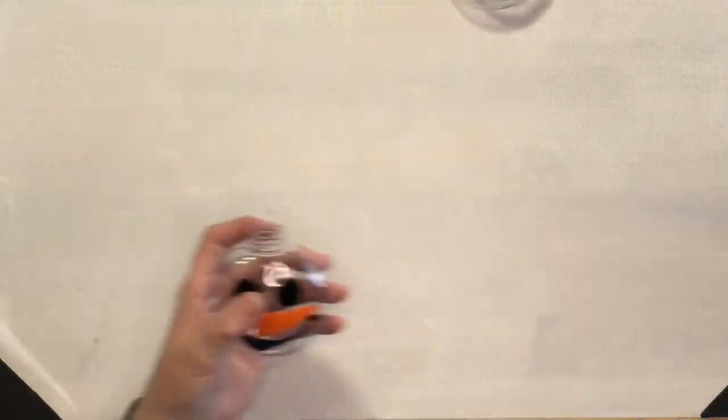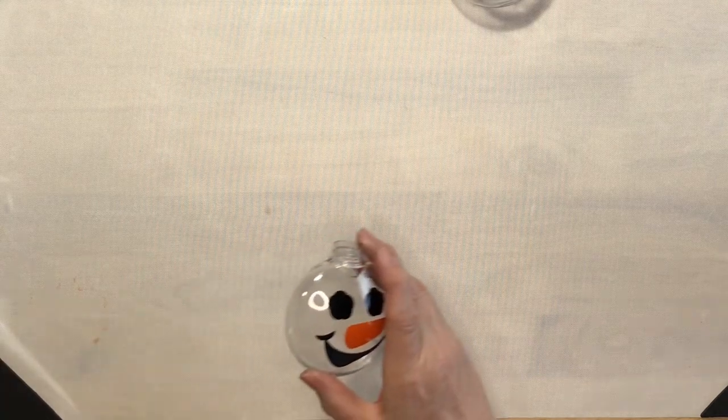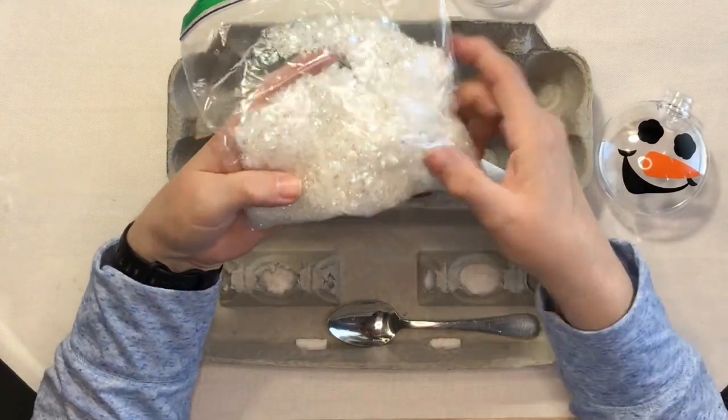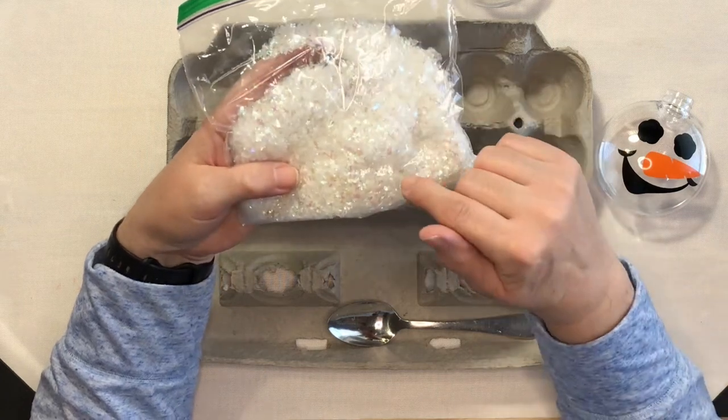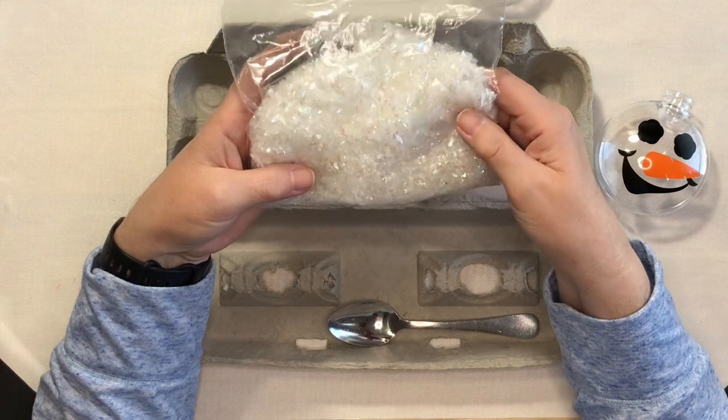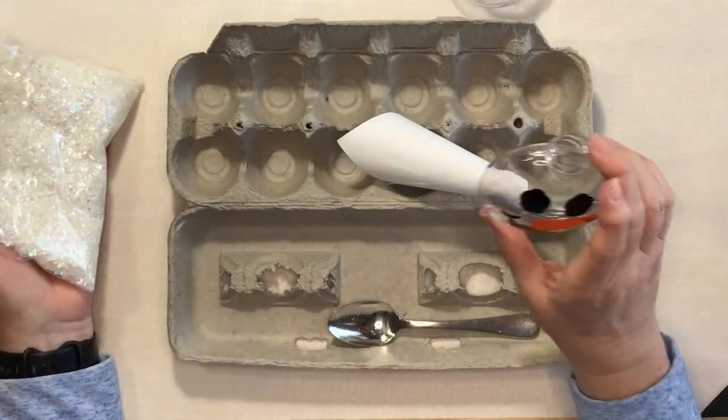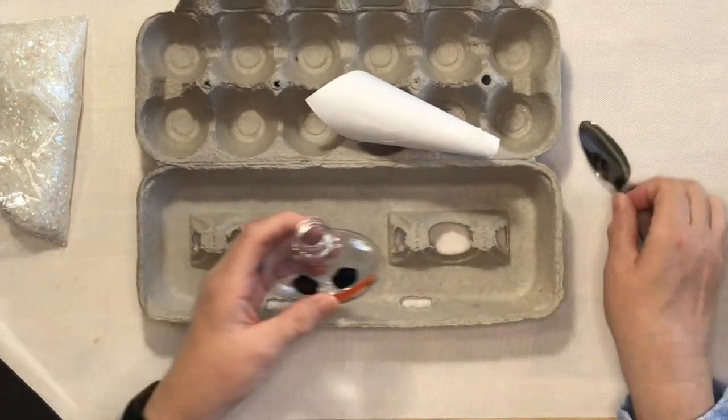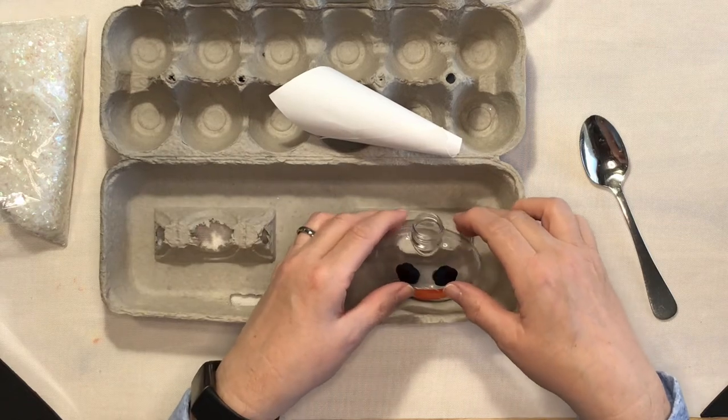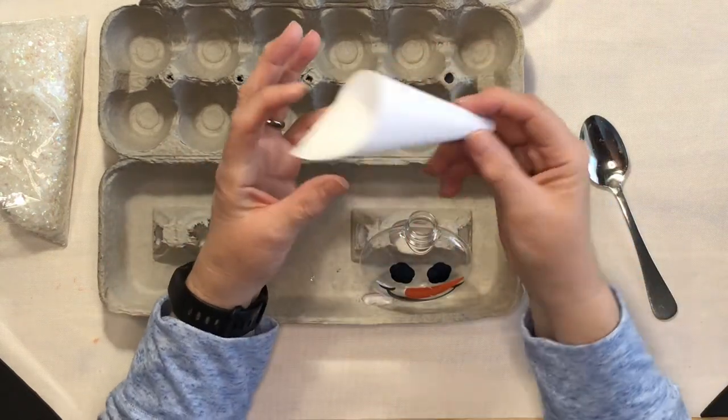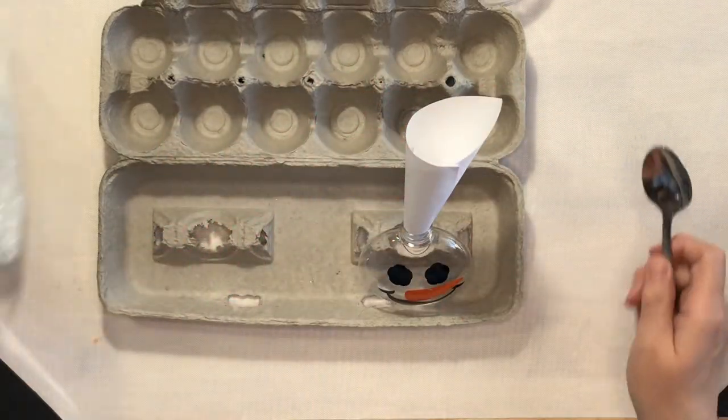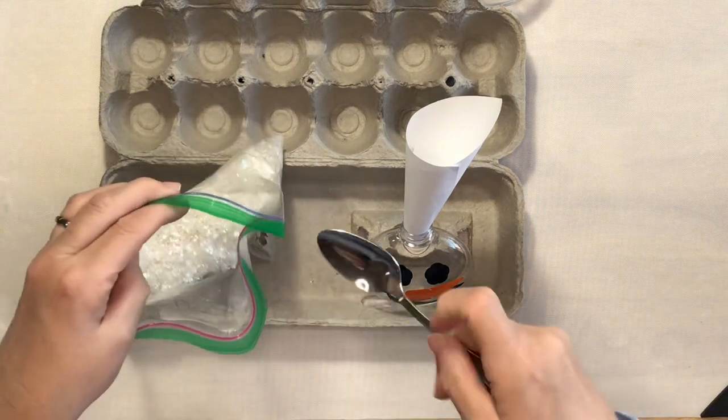So I want to add a little bit something extra to this. So let me bring in a few more supplies here. I have some fake snow that I purchased last year for a floating ornament that I did on the blog. And I want to put some of this inside my snowman. So I brought in an egg carton and I'm just going to set this little guy in there. I made this little paper funnel out of just a piece of scrap paper. And then I have a kitchen spoon.